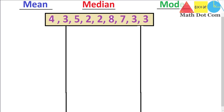Measures of central tendency basically represent a whole set with a single value. We have a whole set of data given here, and by using the measures of central tendency — that is mean, median and mode — we will get a single value that will represent the whole data set. This is a very small data set, but in research, theses, or projects, we often have a very large data set where we need these methods.